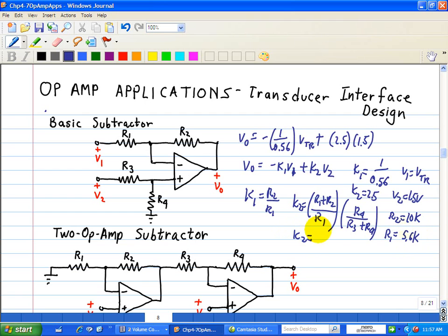And using these values, K2 is just 1 plus 10 over 5.6, and then we have R4, R3 plus R4, which is equal to 2.5. Now solving for R4 yields a relationship between R4 and R3. In this case, R4 is equal to 8.75R3.